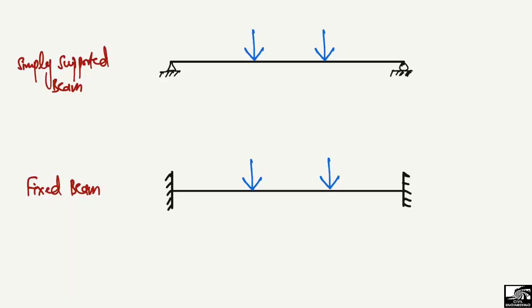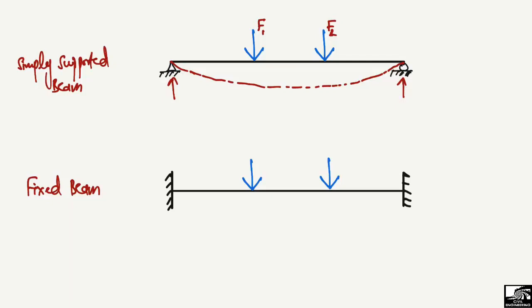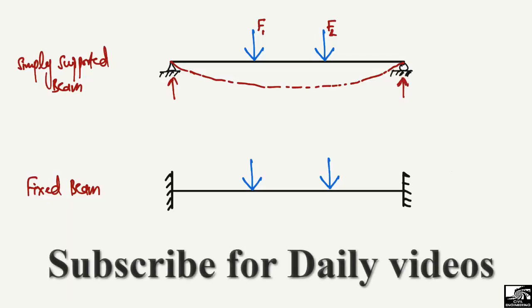Let's suppose this simply supported beam has two point loads — F1 and F2 — acting on it. Under these loads, this beam will try to deflect in this way. At the mid-span we will have some maximum deflection, while at the supports we will have no deflection, and we will have some support reactions at both ends.